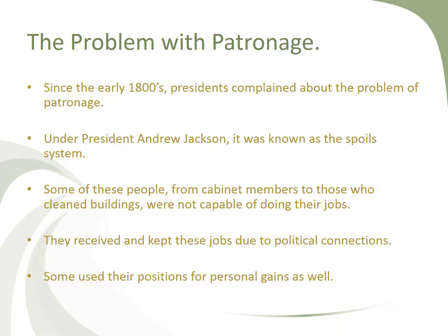So the problem with patronage. Since the early 1800s, presidents complained about the problem of patronage. Under President Andrew Jackson, it was known as the Spoils System — to the victor go the spoils, meaning you could decide who you want in your administration and cabinet. The problem was some of these people, from cabinet members to those who cleaned the buildings, were not capable of doing their jobs. They were given these positions because they had supported the candidate in winning the election, and they received and kept these jobs due to political connections, sometimes using these positions for personal gain as well.